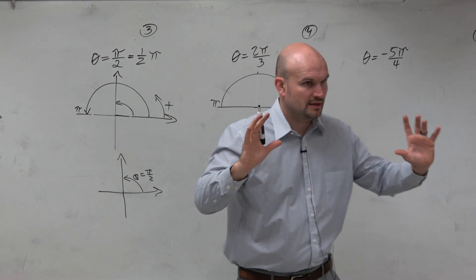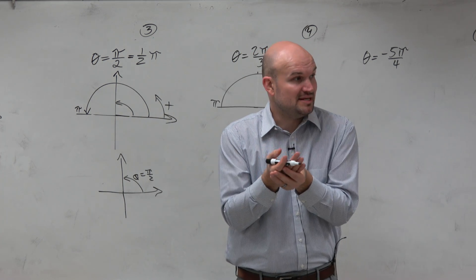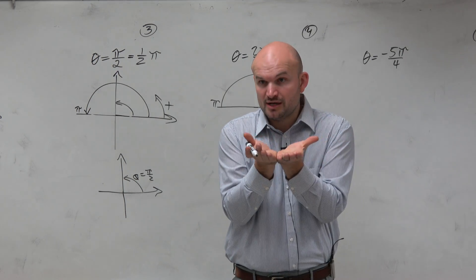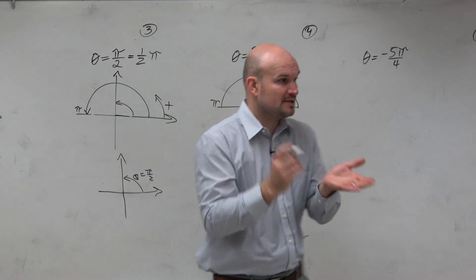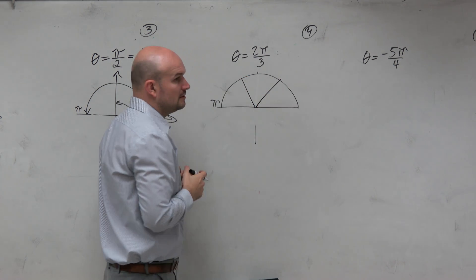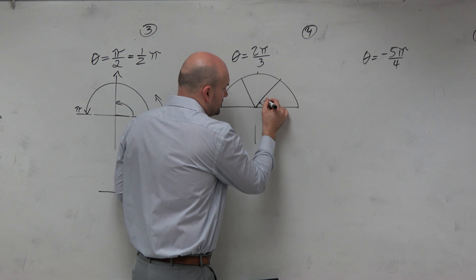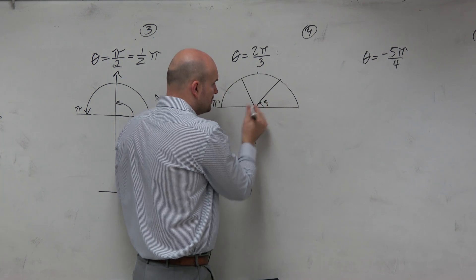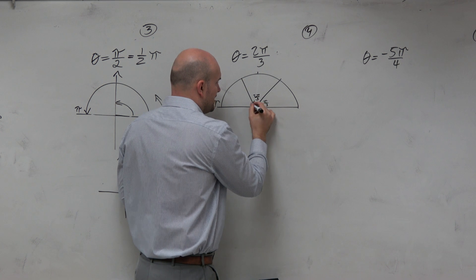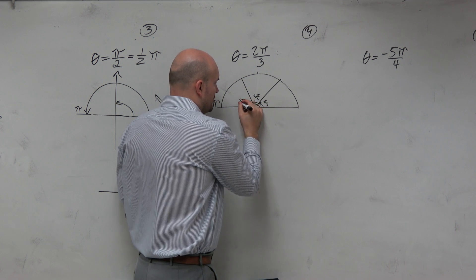Let's just think of a circle. And if I say 2π thirds, that means I want two parts of three. Like of something broken up into three parts, I want two of them, right? So I need to break this up into thirds. So from here to here would be 1 third, from here to here would be 2 thirds, and then from here to here would be 3 thirds.